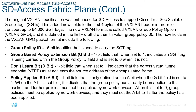The original VXLAN specification was enhanced for SD-Access to support the Cisco TrustSec Scalable Group Tags or SGTs. This added a new field to the first 4 bytes of the VXLAN header in order to transport up to 64,000 SGT tags. The new VXLAN format is called VXLAN Group Policy Option or VXLAN GPO, defined in IETF Draft Smith VXLAN Group Policy 05. The new fields in the VXLAN GPO packet format include the Group ID, Group Based Policy Extension bit, Don't Learn bit, and Policy Applied bit.